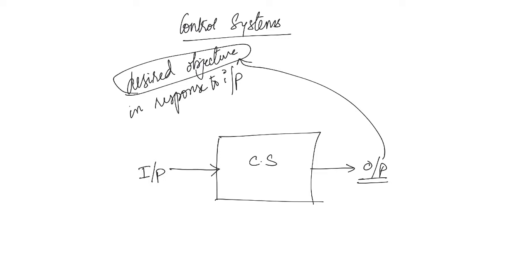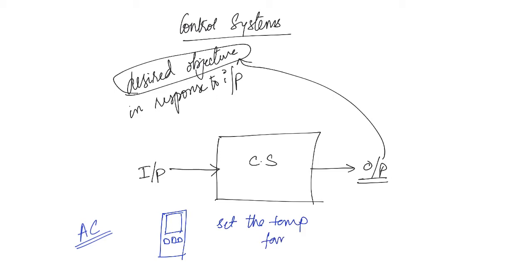For example, if you consider an air conditioner, it will have a remote with a screen and some buttons. Using these buttons you can set the temperature, the fan speed, and fan alignment. Setting the temperature, fan speed — whatever the buttons correspond to — these are the inputs. This remote is a control system, and depending on the inputs, it will make the air conditioner work at the desired temperature or fan speed.